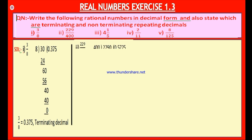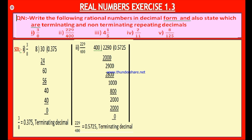Now look at the second bit: 229 divided by 400. You cannot divide 229 with 400, so keep 0 point — it will be 2,290. 400 five times: 5 × 400 is 2,000. If you subtract, you get 290. Write 0 beside 290 to get 2,900. In 2,900, 7 times 400 is 2,800; remainder 100. Keep 0 to get 1,000. 400 two times: 2 × 400 is 800; remainder 200. Keep 0 to get 2,000. 5 × 400 is 2,000; remainder 0. Therefore 229 divided by 400 is 0.5725. It is also a terminating decimal.